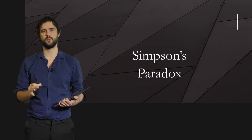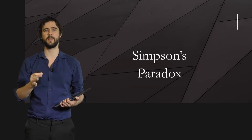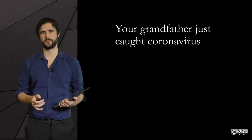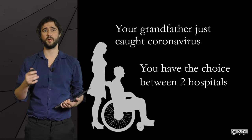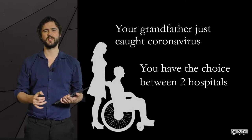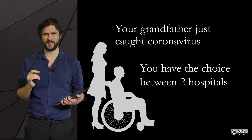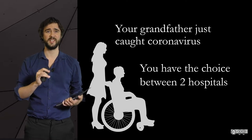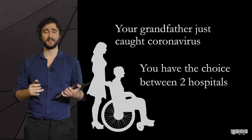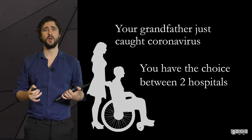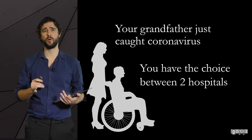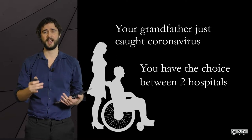To make you grasp intuitively what it is all about, let me put you in a situation where a good understanding of the paradox could be useful. Your grandpa has been tested positive to a virus — let's say the coronavirus — and you need to bring him to the hospital fast. There are two hospitals nearby, and you want to choose the one where he is most likely to survive. You have data on what happened in these two hospitals over the past two weeks, and you know the proportion of people whose condition improved.